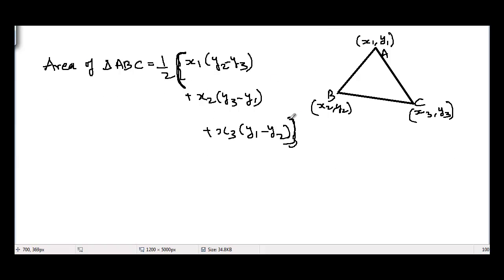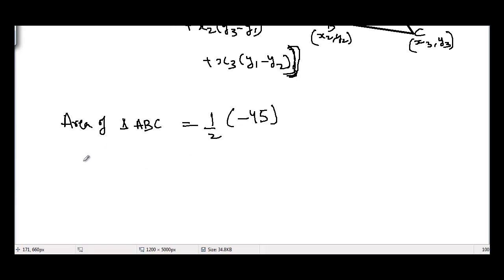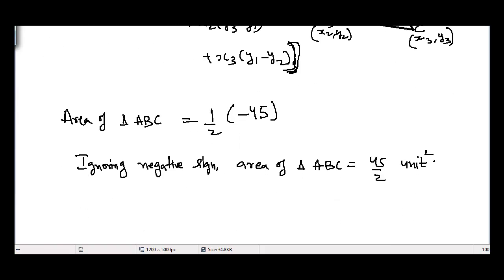evaluate this portion. Let's suppose that you get area of triangle ABC equal to 1 by 2 and you get minus 45 in this portion. Then you will have to ignore the negative sign, then you will have to write that ignoring negative sign area of triangle ABC is equal to 45 divided by 2 unit square. So in